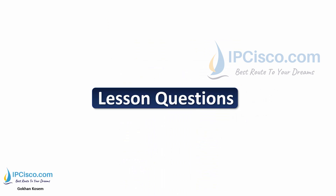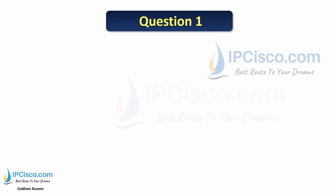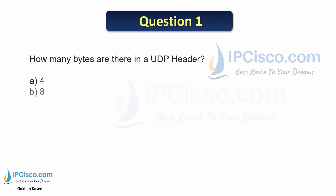These questions are also asked in real network engineering job interviews. Question 1: How many bytes are there in a UDP header? The options are 4, 8, 12, 20, or 40. The answer is 8 bytes.